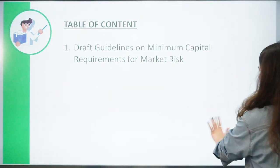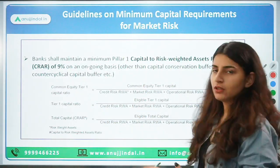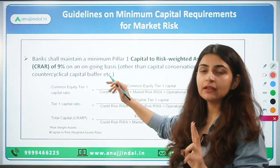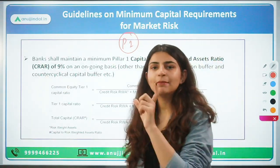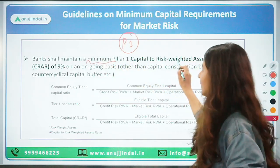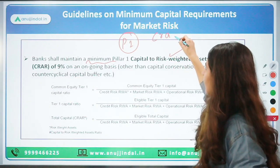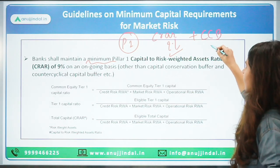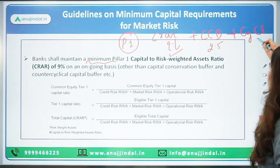After Basel norms 1, came Basel norms 2. Under Basel 2, the Basel committee talked about three pillars. Pillar 1 talked about the minimum capital requirement for risk-weighted assets — the minimum CRAR that was supposed to be maintained, which was 9%. Apart from that, a capital conservation buffer of 2.5% and a counter-cyclical capital buffer was supposed to be maintained.